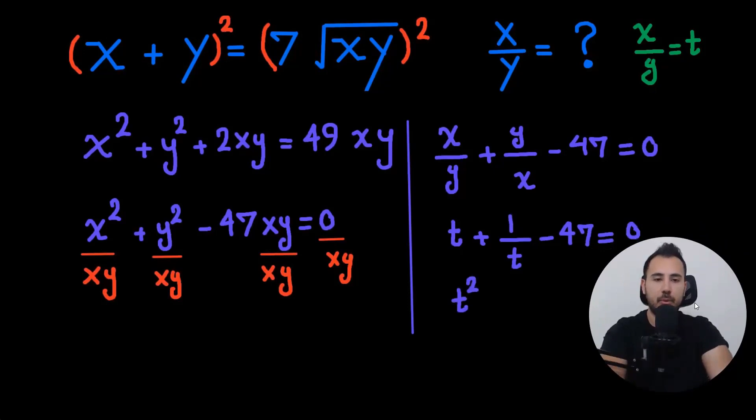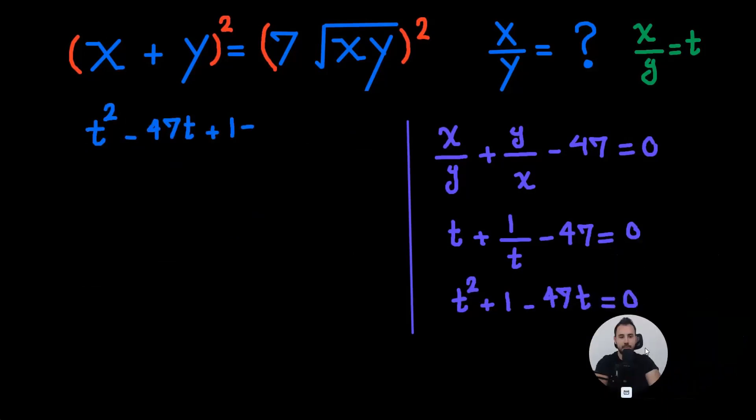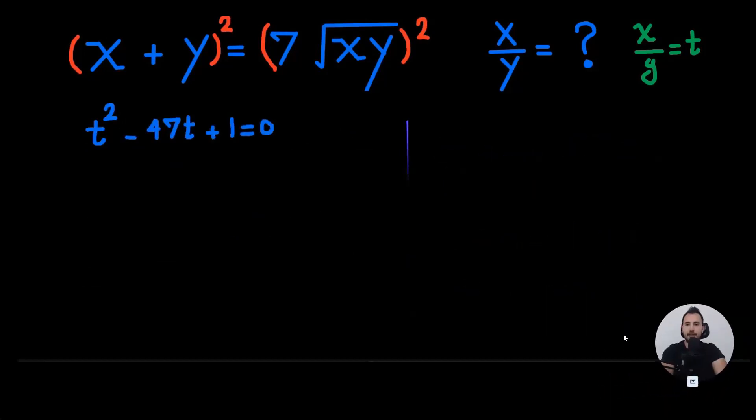Now let's multiply each term by t. When we do so, we'll get a quadratic equation. Again, it's equal to 0. So we need to deal with this now.